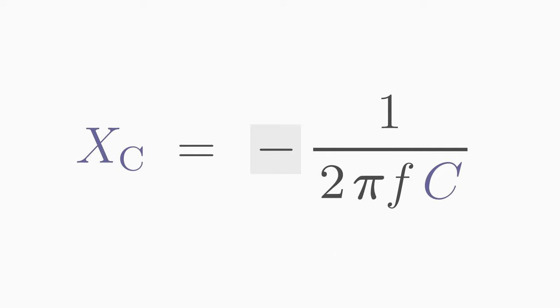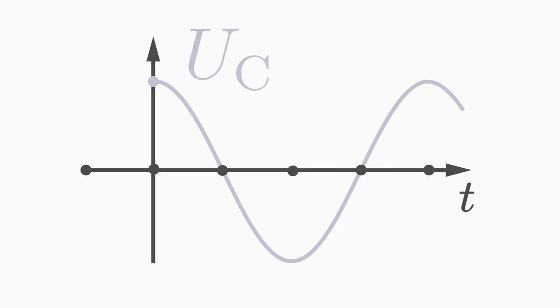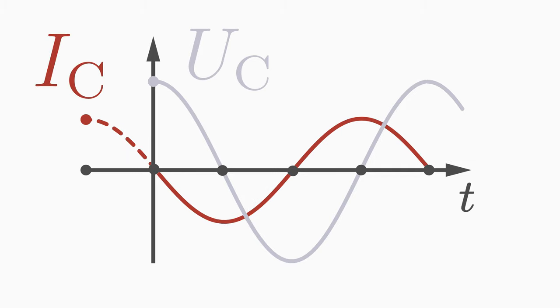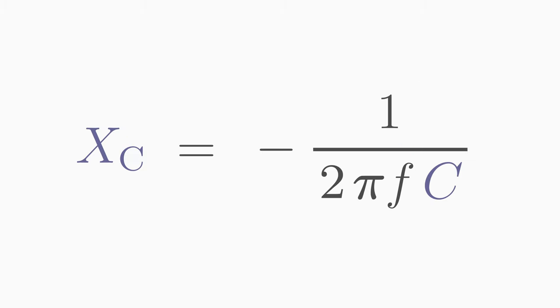The minus sign states that the alternating voltage lags behind the alternating current. The unit of capacitive reactance is ohm. By the way, 2 pi times F is often combined to the angular frequency omega.